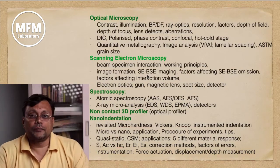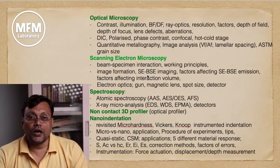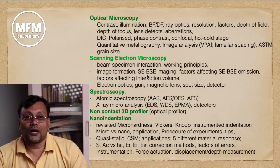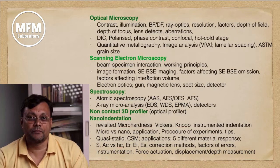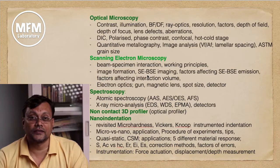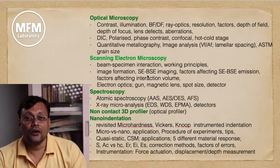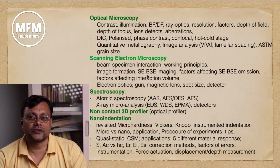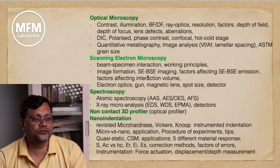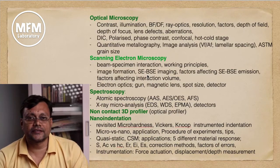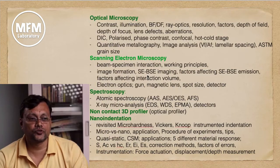There are also important instrumentation parts. Since we are all earning an engineering degree, it is very important to learn the instrumentation part of each instrument taught in this subject. Therefore, electron optics, gun, magnetic lens, spot size, and detectors are very important aspects of learning the instrumentation.